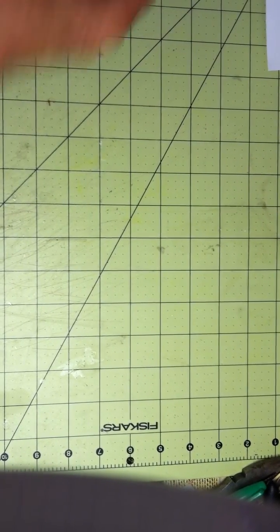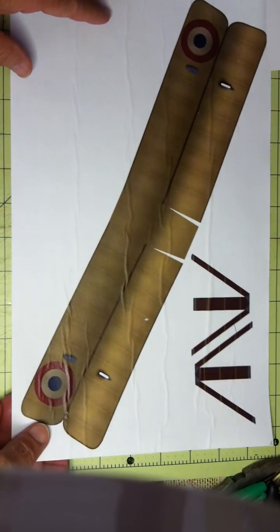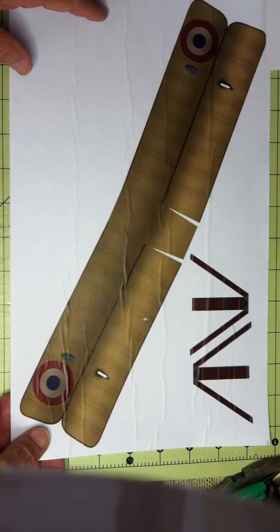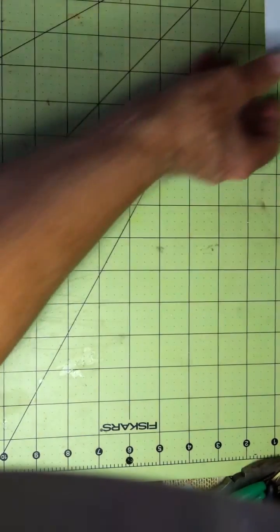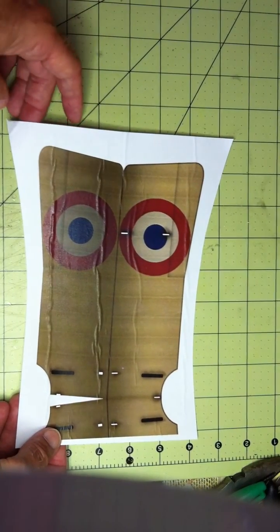I start out having printed the wings, this is the bottom wings for example, on a tissue, then I trim the tissue around the piece that I want to take off.